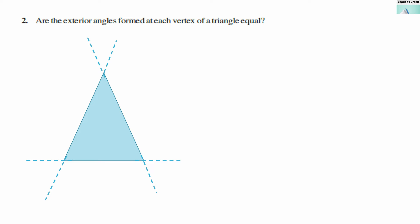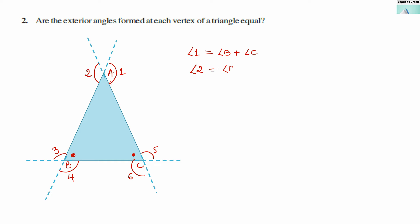Our second question: are the exterior angles formed at each vertex of a triangle equal? Let us draw all the exterior angles for triangle ABC. Exterior angle 1 is going to be equal to the addition of angle B and angle C — the two non-adjacent interior angles. Similarly, exterior angle 2 will also be equal to the sum of angle B and angle C.